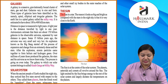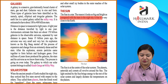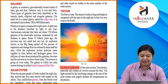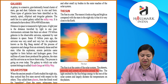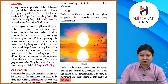The Sun is a star. The reason it looks so big and bright compared with stars in the night sky is that it is very close to Earth. The Sun is at the center of the solar system. The planets, asteroids, and comets all revolve around the Sun. The light emitted by the Sun brings energy to the rest of the solar system and largely determines the temperature on the planets.